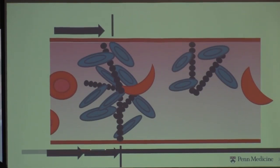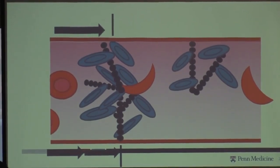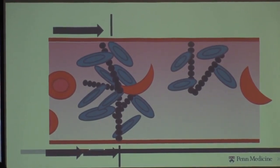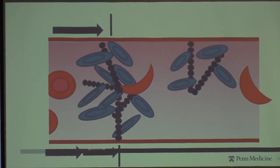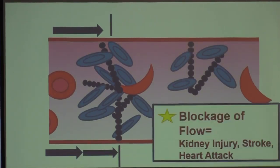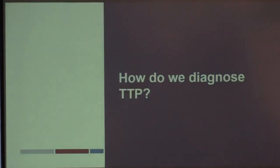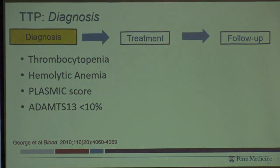When so many platelets get caught up, you don't get good blood flow. And when you don't get good blood flow, you can get things like stroke or kidney injury. That blockage of blood flow is exactly what's causing those complications.